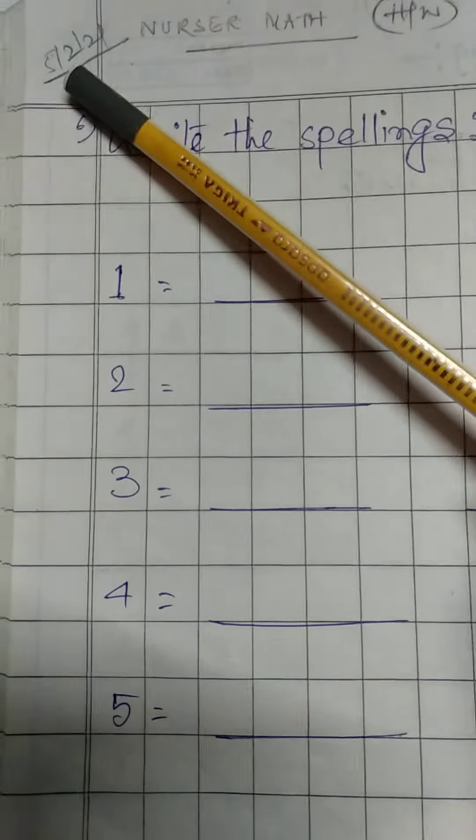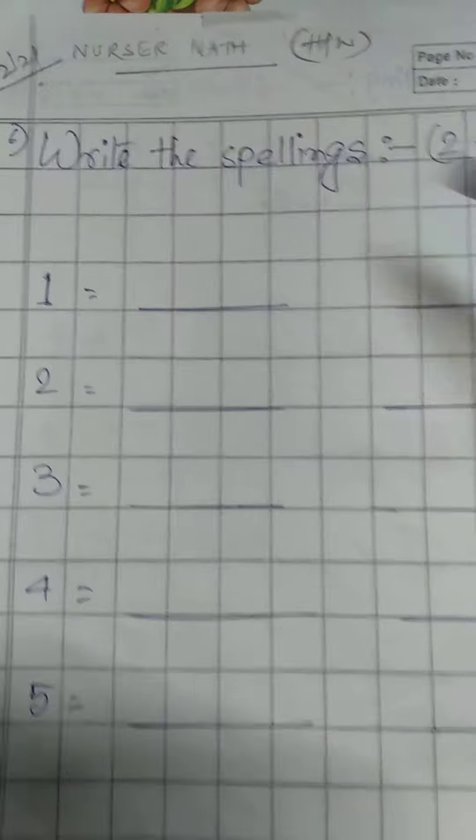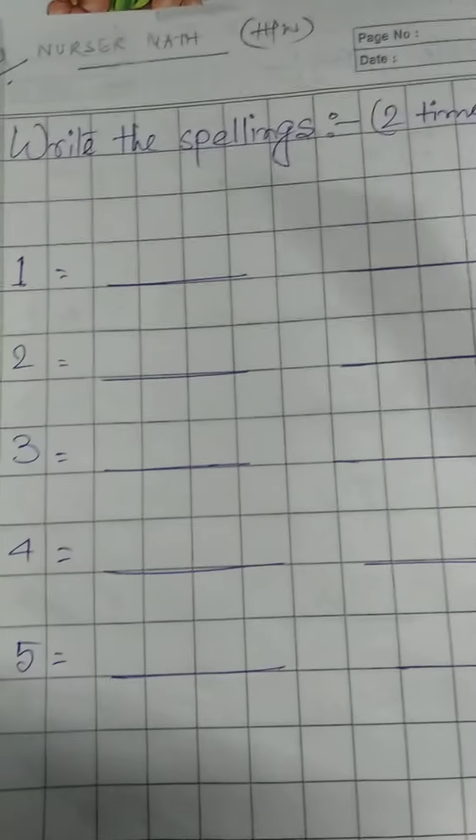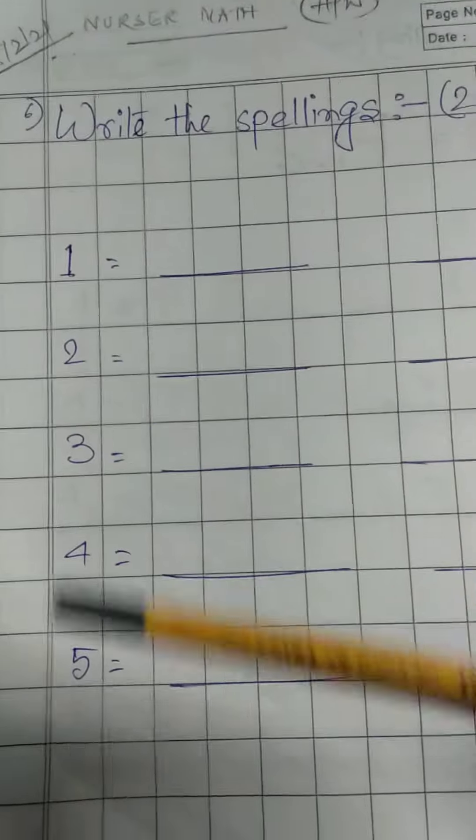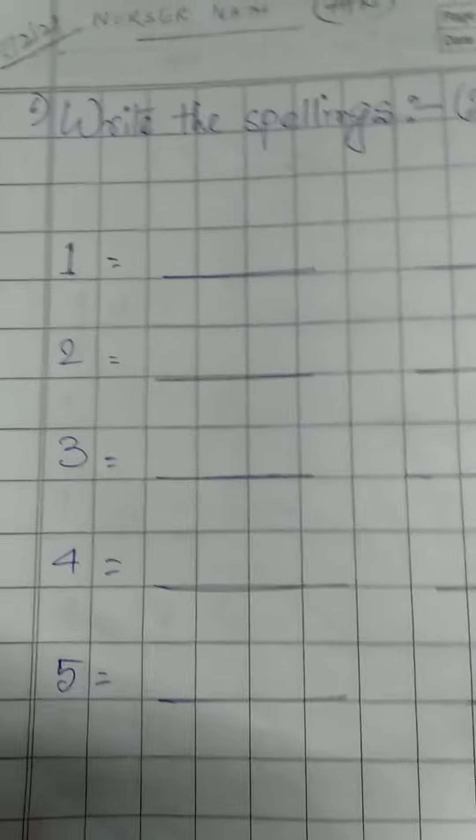Hello my dear students, today's date is 5th of February 2021. Our class is Nursery Math and this is our homework class. So today we will write the spellings. Here are the numbers and you have to write the spellings. You have to see the numbers and write the spelling with the numbers.